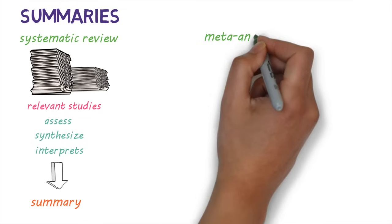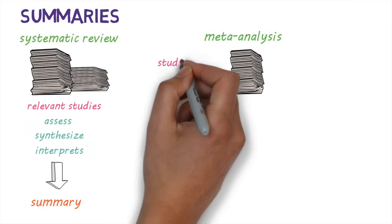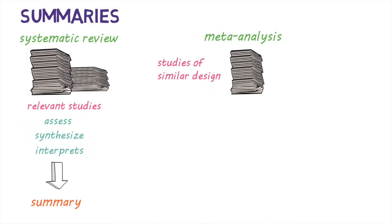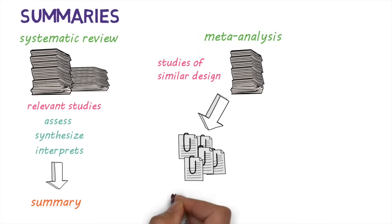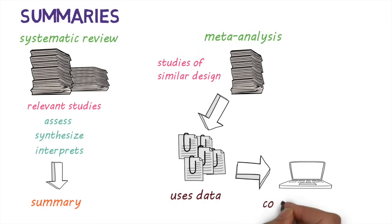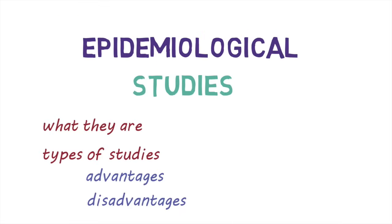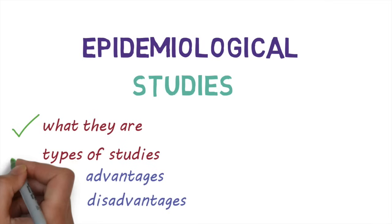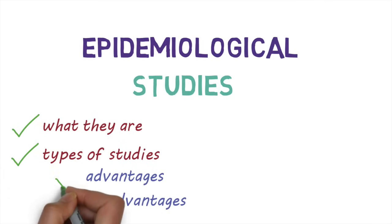A meta-analysis uses data from all the studies that have addressed the same question and have a similar study design. It then uses the data from these studies to do a combined statistical analysis and produces a single summary result. And that's an overview of some of the commonly used epidemiological study types. We've had a look at what a study is, different study types, and their advantages and disadvantages.